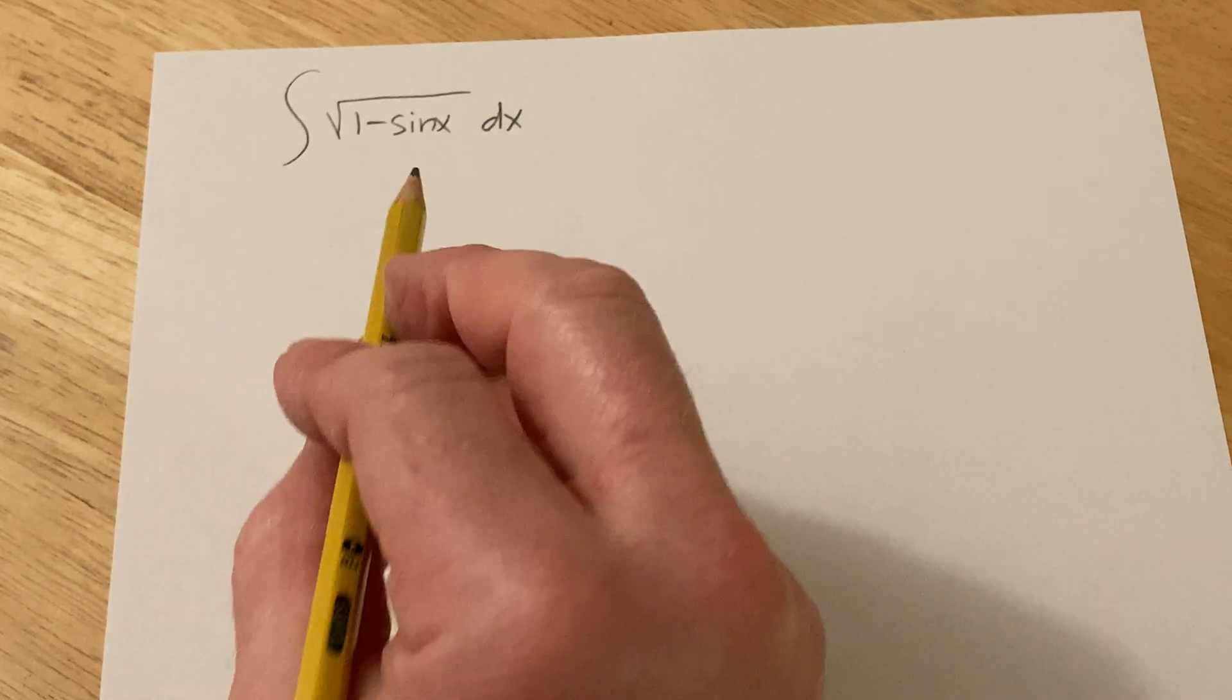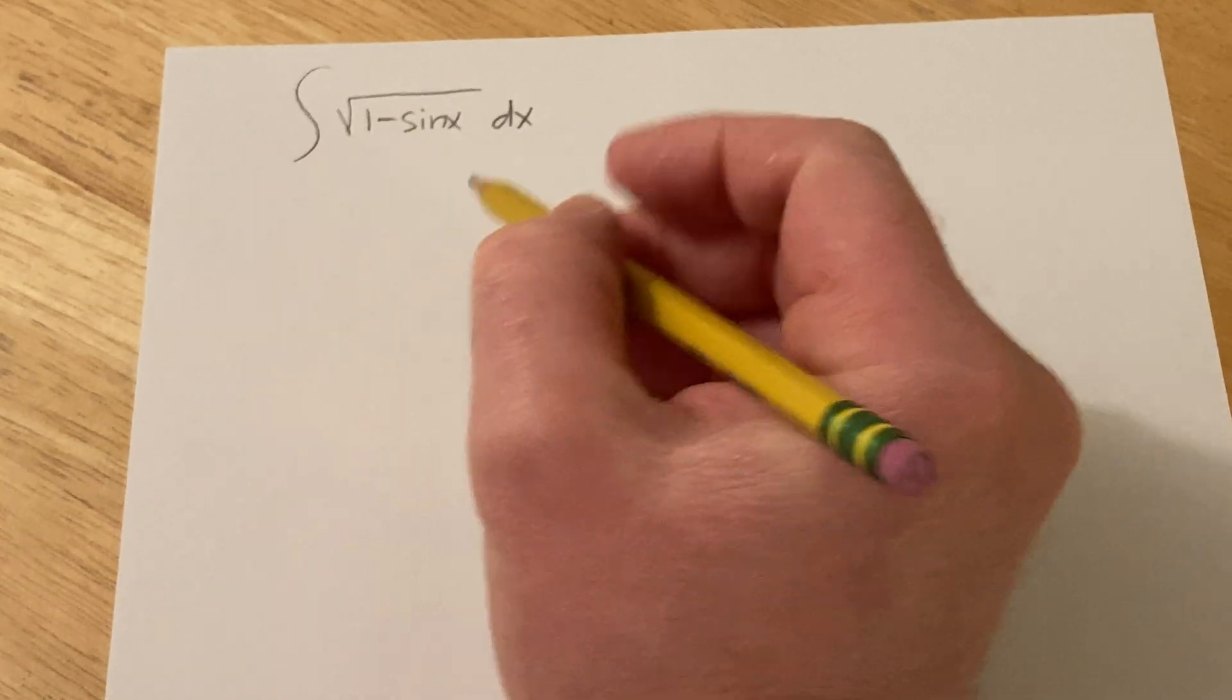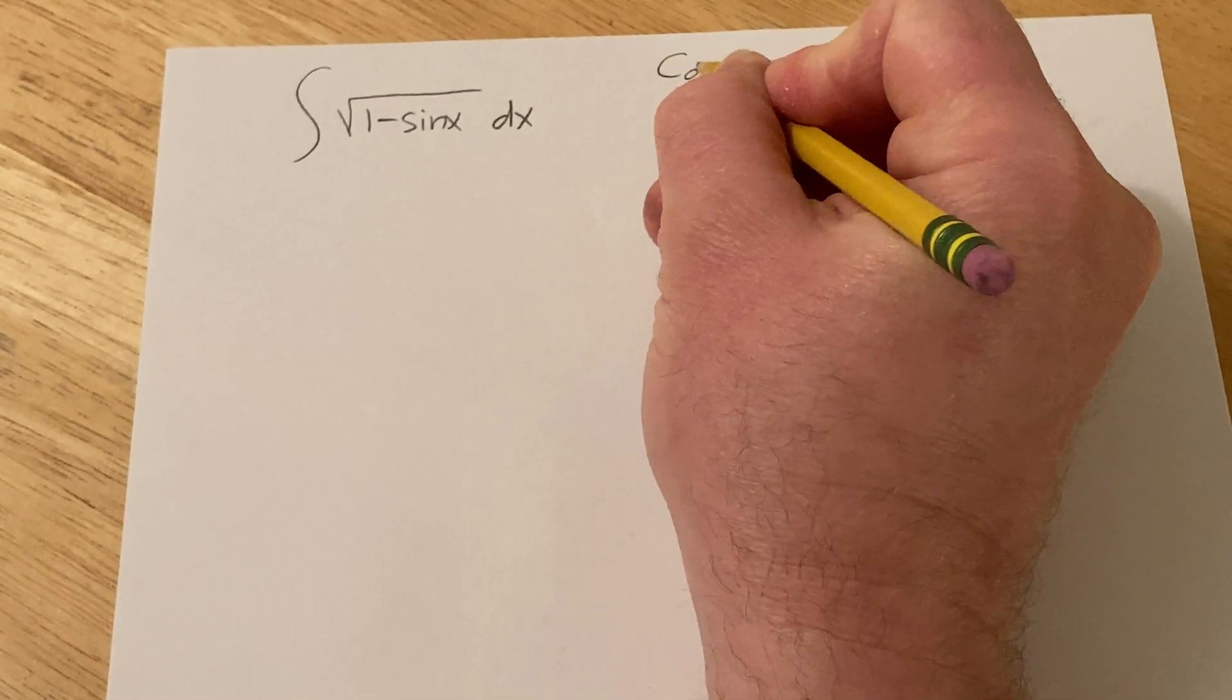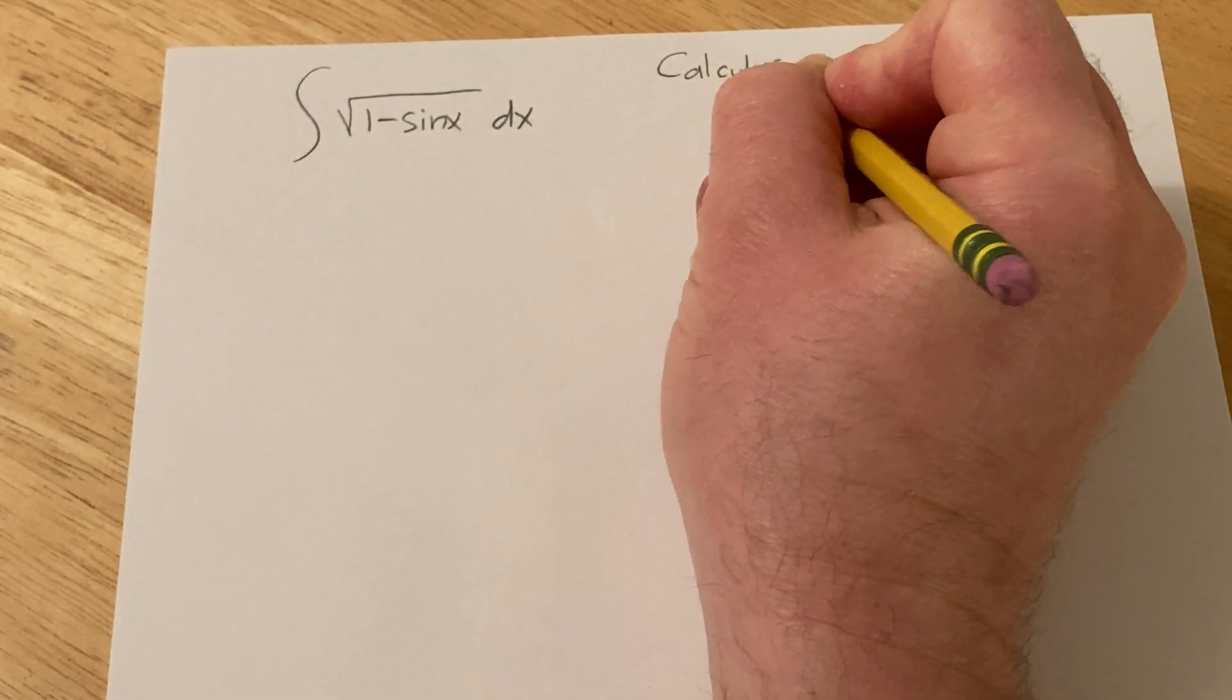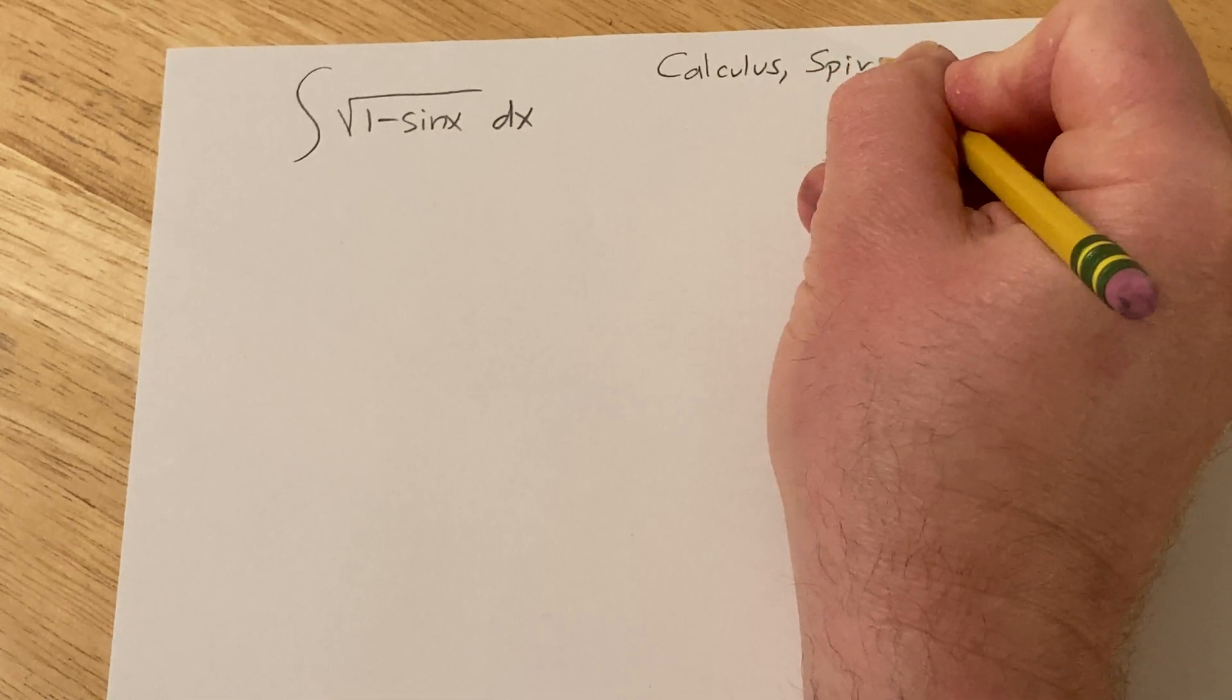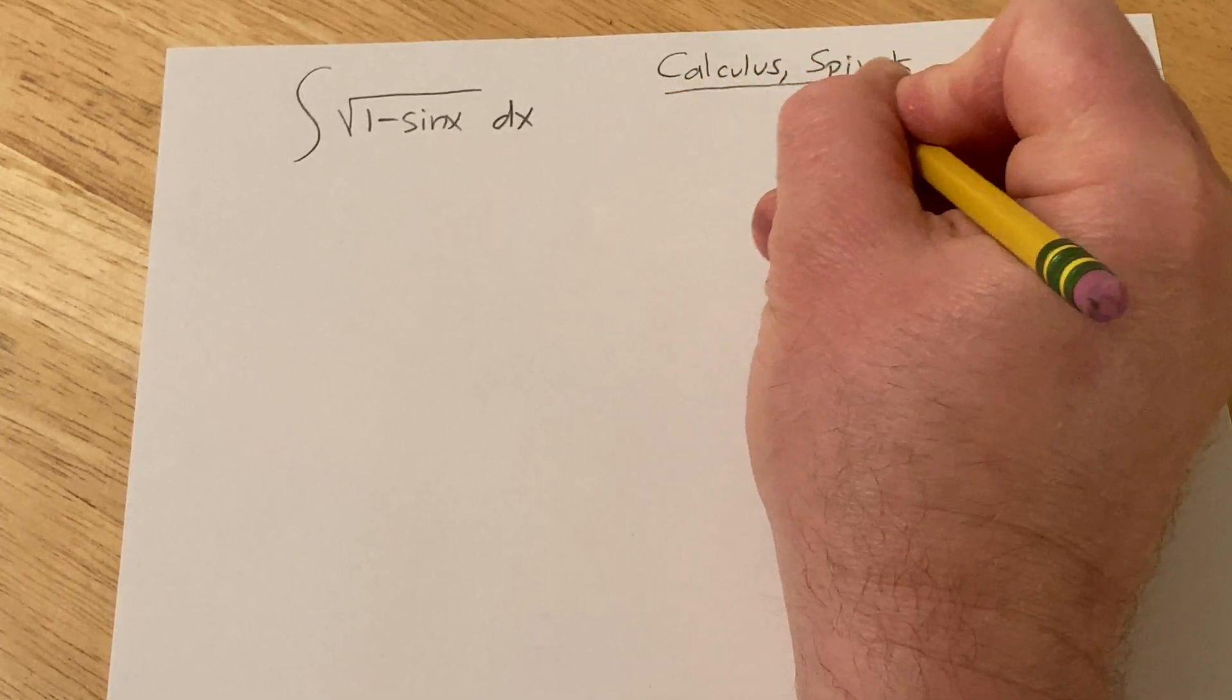Hi, in this problem we're going to be integrating the square root of 1 minus sine x. This is from a book called Calculus, and it was written by Michael Spivak. It's a really good book.